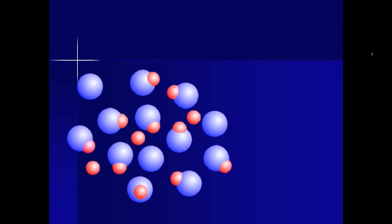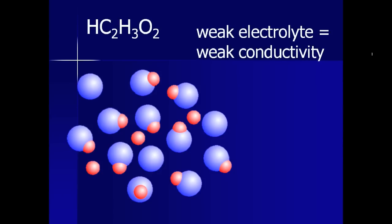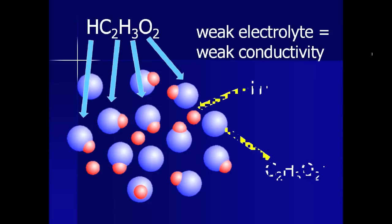There are some substances that only partially dissociate when they dissolve in water. For example, vinegar is essentially a solution of acetic acid in water. This solution is considered a weak electrolyte, because most of the acetic acid molecules actually stay together rather than dissociate. However, a small percentage do dissociate, so it can conduct a small amount of electricity through it.